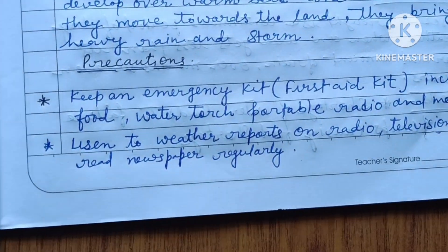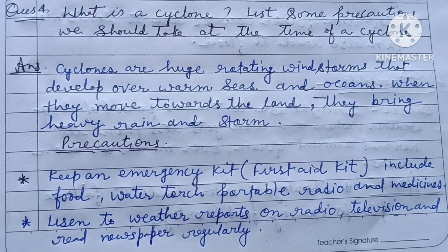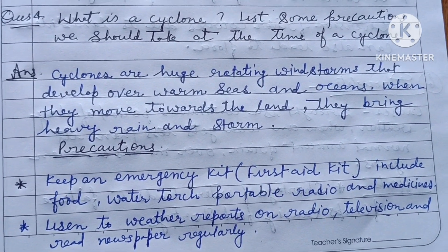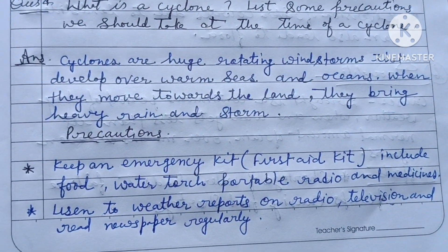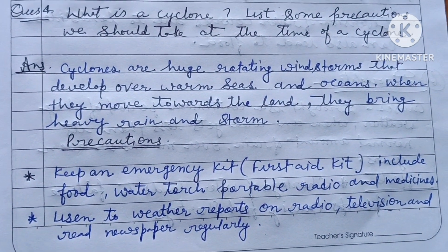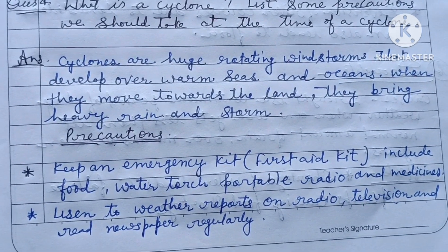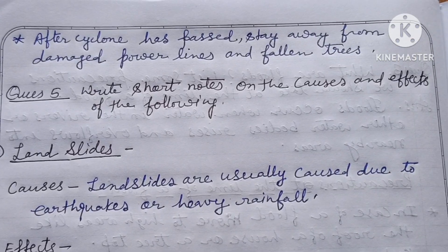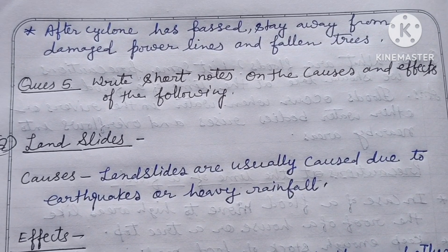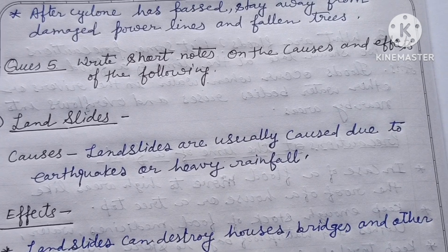Precautions for cyclone: keep an emergency kit — first aid kit — including food, water, torch, portable radio, and medicines. Listen to weather reports on radio and television and read newspapers regularly. After a cyclone has passed, stay away from damaged power lines and fallen trees.